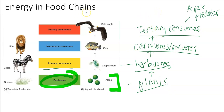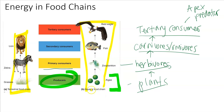That's a food chain. If you look at it, we have two food chains here. We have lion, zebra, and grass — the grass gets eaten by the zebra, and the zebra gets eaten by the lion. And we have algae, zooplankton, fish, and bald eagle. So those are two food chains.